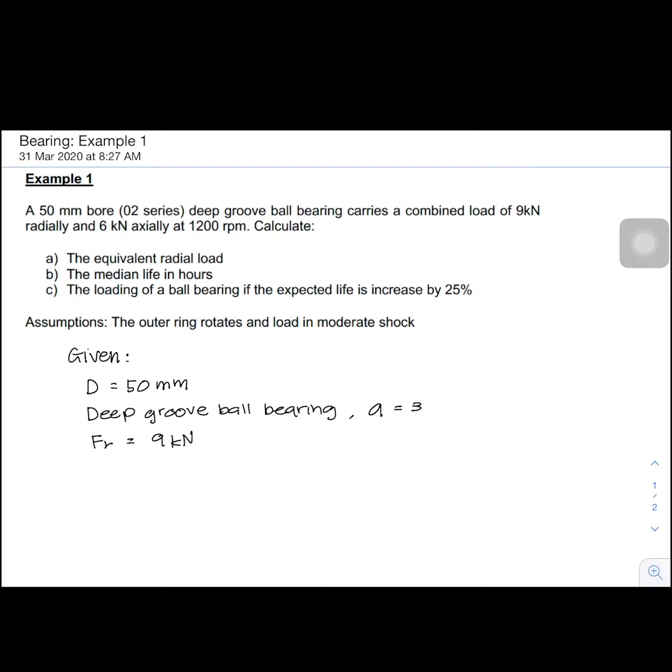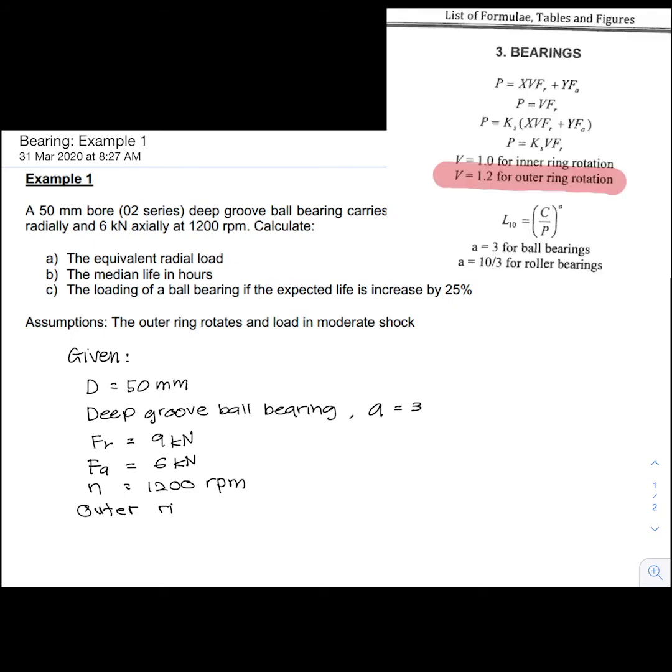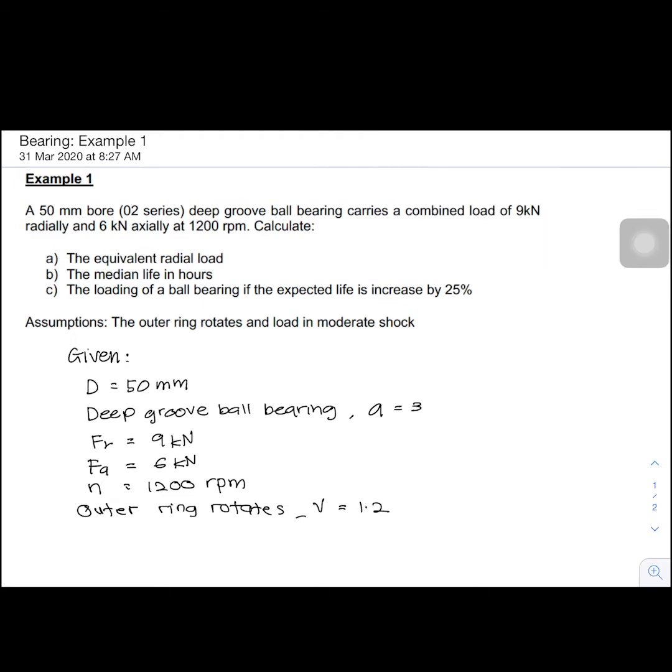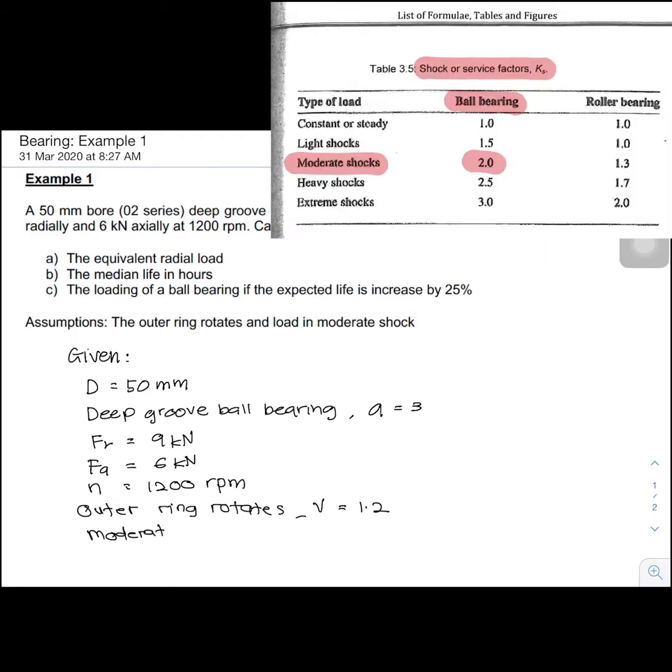Axial load FA equal to 6 kN. Angular speed N equal to 1200 rpm. Outer ring rotates, refers to V equal to 1.2. Moderate shock load, refers to Ks equal to 2.0.